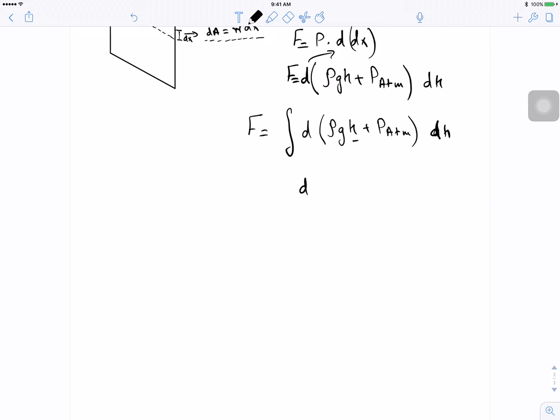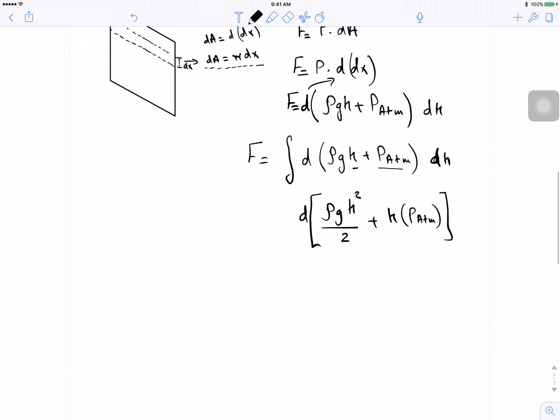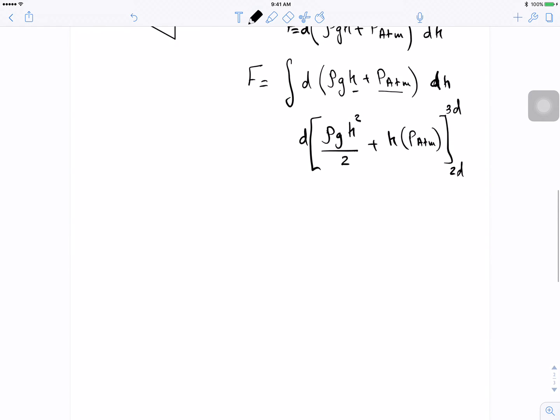So let's integrate this guy. So d, let's take this out, keep it out. Then rho g h, this is constant, this constant and h is just going to be h squared, the total thing divided by 2. Plus this is going to be constant, so when you integrate the constant it's just going to add an h to it. So P ATM. And this is going from 2d to 3d.